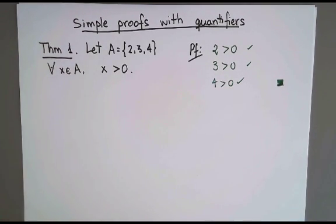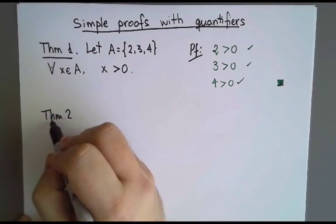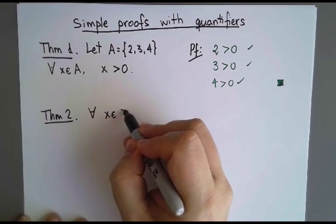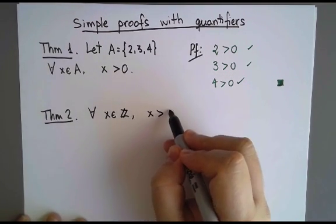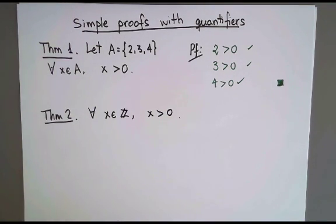So that was easy. Let's do something else. Here's the second theorem. I'm going to write something similar but for a different set. This reads, for every integer x, x is greater than 0.